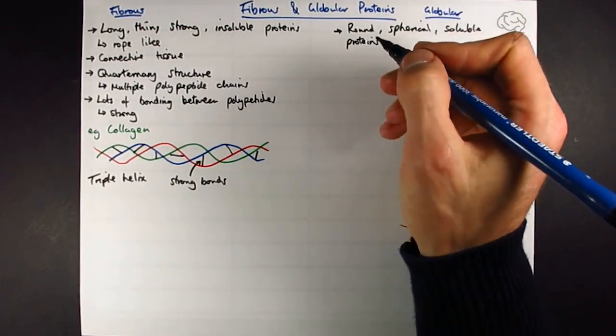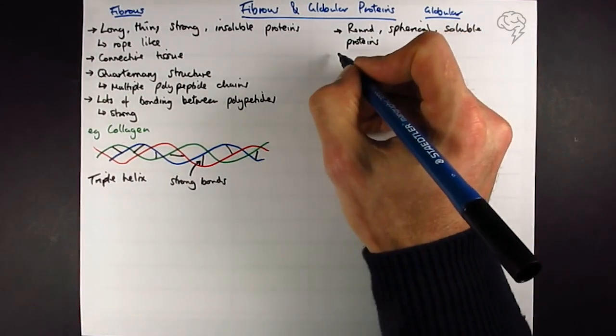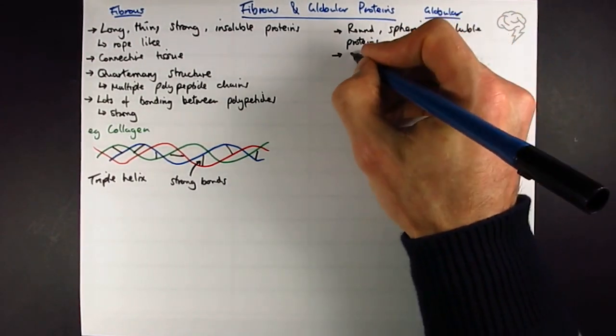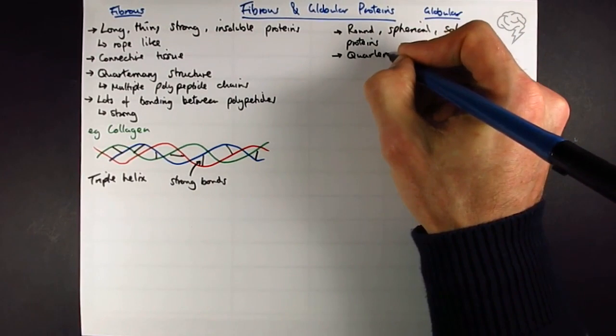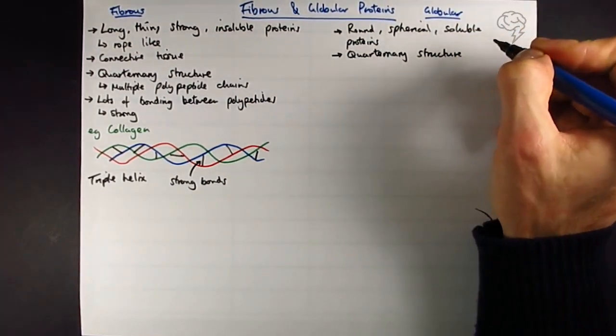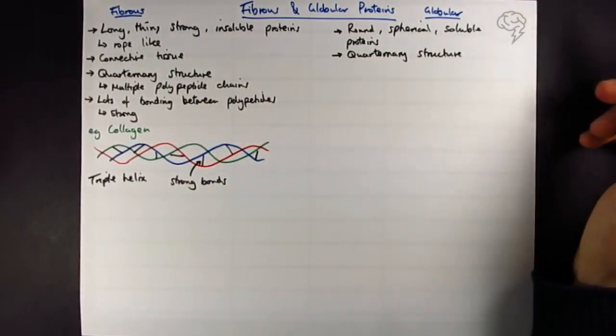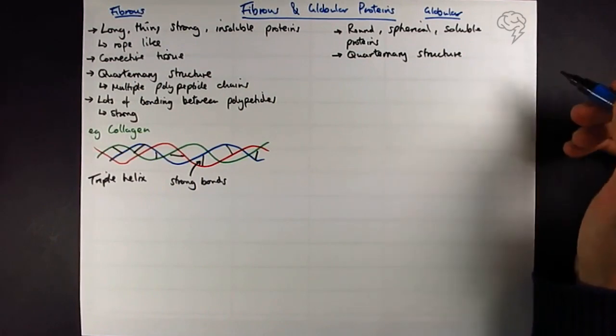They have a wide variety of uses. Hemoglobin is the protein in blood that carries oxygen around. Enzymes are globular proteins, and we're going to look at some examples in a moment. They also have a quaternary structure, and this allows them, because they're spherical as opposed to long and thin, they have an outside and an inside.